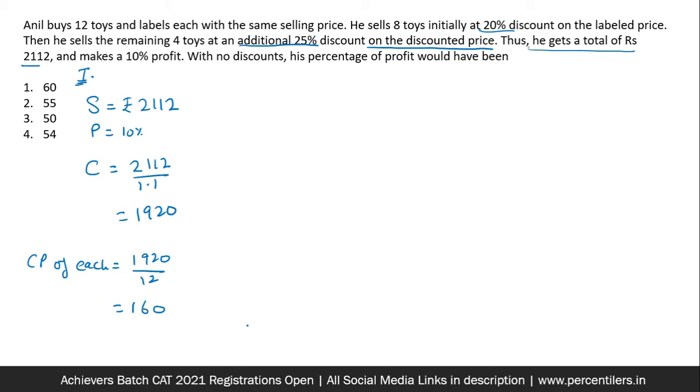This you have to understand on your own. If the profit is 10%, a selling price would be 110% of cost price. This you have to understand. So this is one method. So cost price of all the articles together is 1920 and cost price of each is 160.